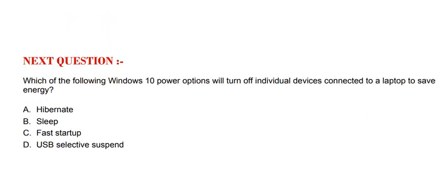Next question: which of the following Windows 10 power options will turn off individual devices connected to a laptop to save energy? Option A: hibernate. Option B: sleep. Option C: fast startup. Option D: USB selective suspend. The correct option is Option D.